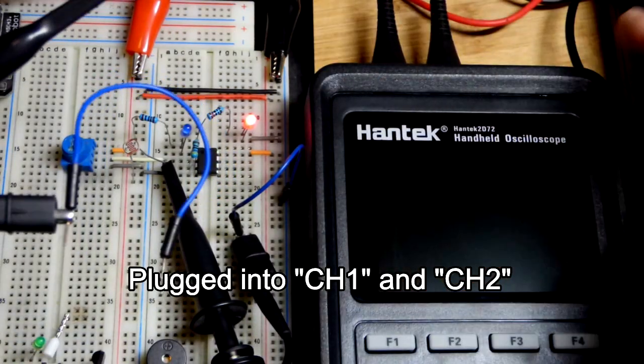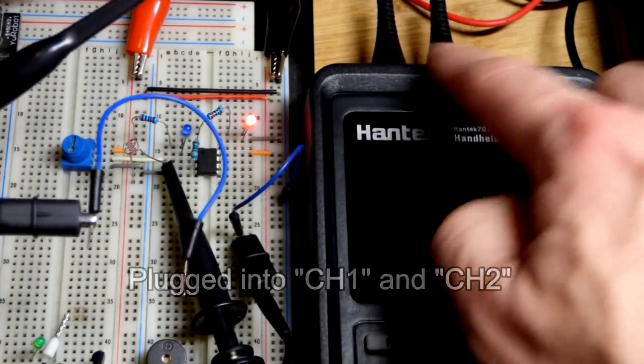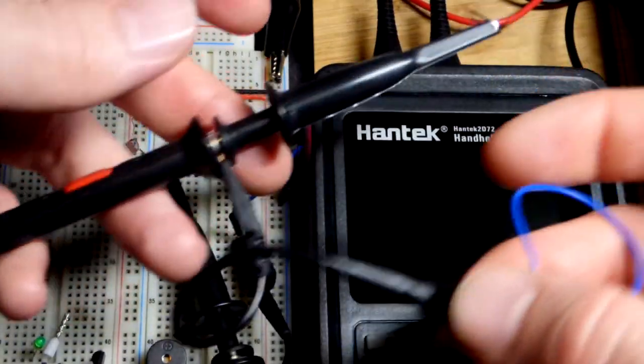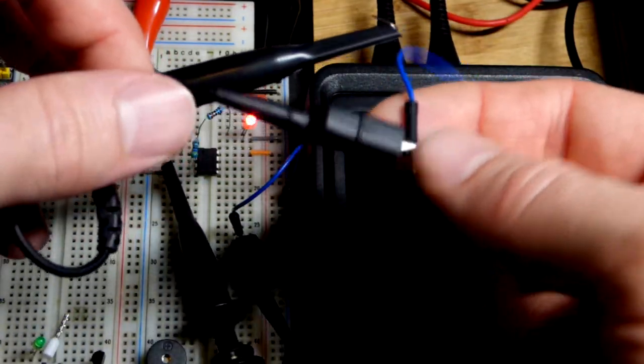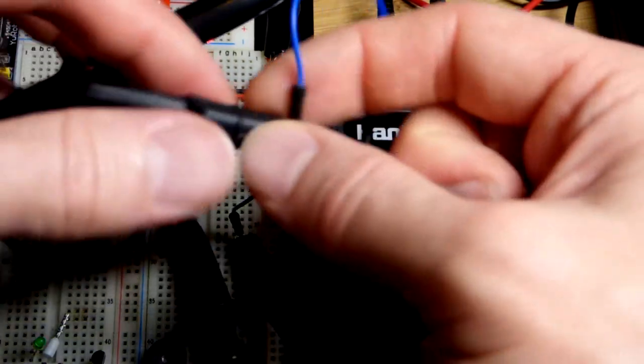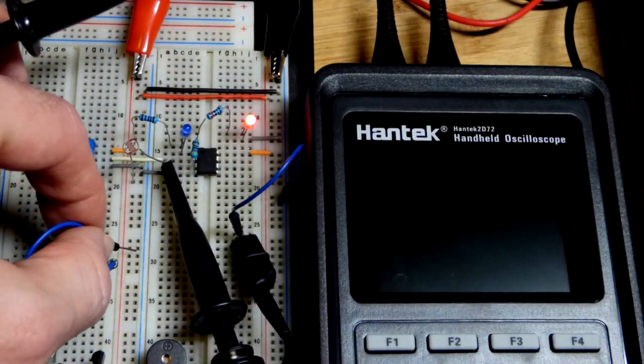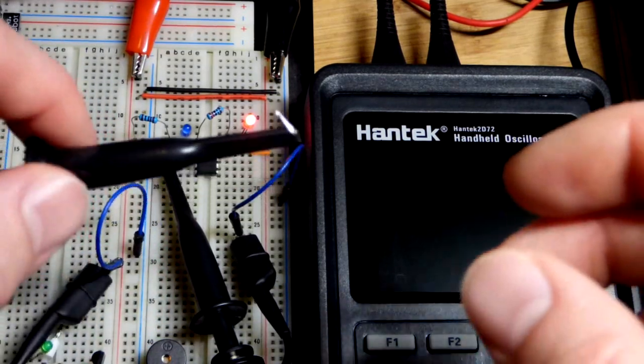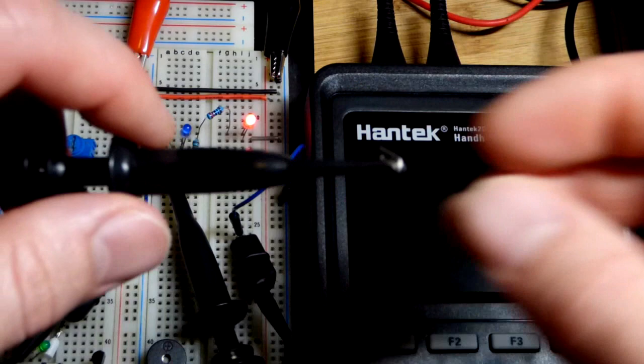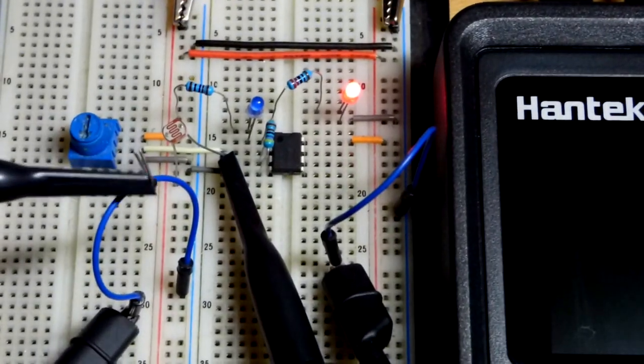So now we plug both probes into the BNC plugs up on top. They're BNC cables. And at the other end of the probe, this is how it came when I bought the meter new. It came with two of these probes. The ground clip, though, we did not have a jumper. I added that. So let's just plug that anywhere. And then we want that to ground.